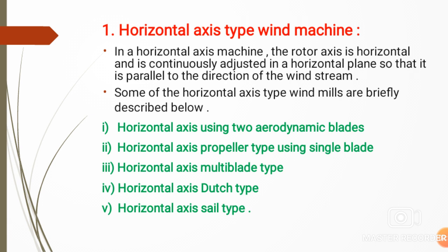In a horizontal axis machine, the rotor axis is horizontal and is continuously adjusted in a horizontal plane so that it is parallel to the direction of the wind stream. The axis of rotation is horizontal and is continuously adjusted so that it will be parallel to the direction of the wind stream. Some horizontal axis type windmills are briefly described below.